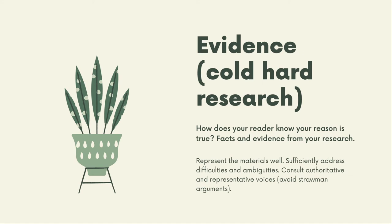For a lot of us in religious and theological studies, evidence really comes from three main areas. The first is what I think of as textual historical study — primarily for textualists working with texts or cultures that no longer exist. Or, by contrast, those who observe current practices and even interview practitioners of religion or theological positions. The goal in dealing with evidence is that you want to represent the materials as best you can, sufficiently address any difficulties and ambiguities, and consult authoritative and representative voices — again, to avoid straw man arguments. Make sure that as you deal with the evidence, you're doing so in a way that is in line with the field more generally. One good way to do that is to start by consulting reference materials and then moving on.